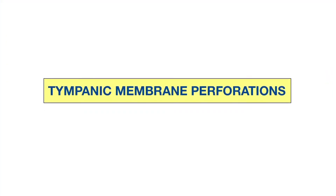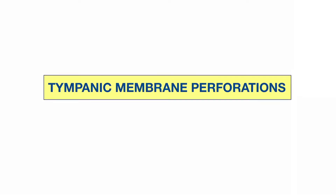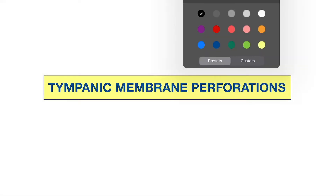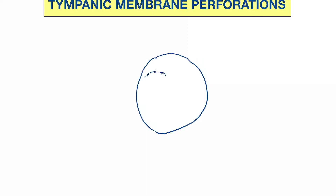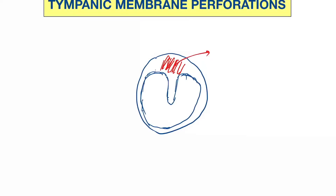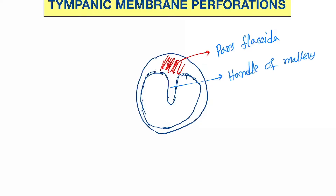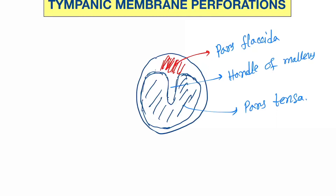Hello friends, today our topic is tympanic membrane perforation. We will discuss all the types of tympanic membrane perforation. First we have to understand the basic anatomy of the tympanic membrane. This is the handle of malleus, this area is called pars flaccida, this area is called pars tensa, and this ring is called the annulus.